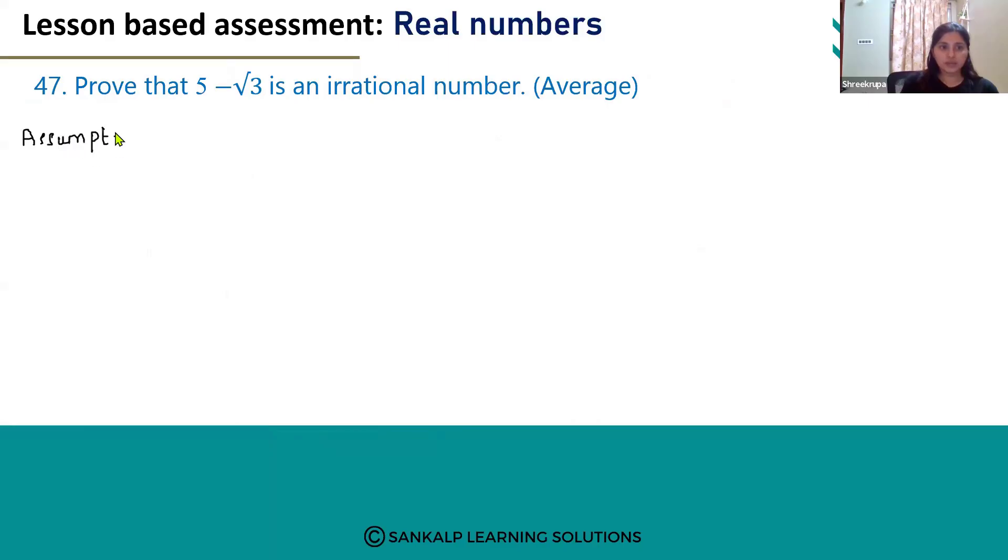Here we have to assume 5 minus root 3 is a rational number. If we assume 5 minus root 3 is a rational number, then we can express 5 minus root 3 as p by q, because rational numbers can be expressed in the form of p by q. Correct?